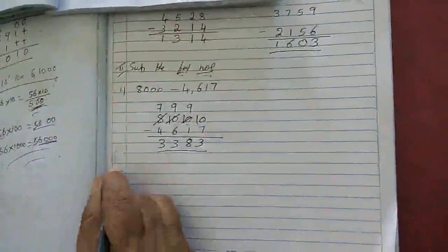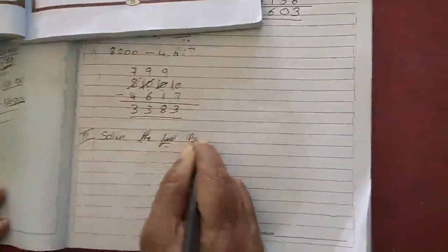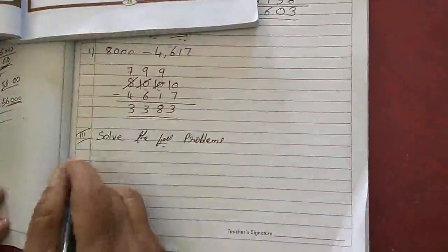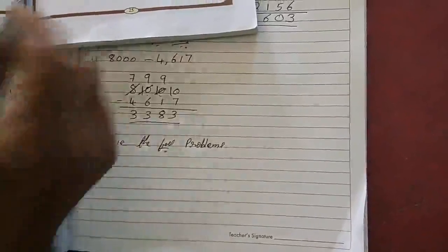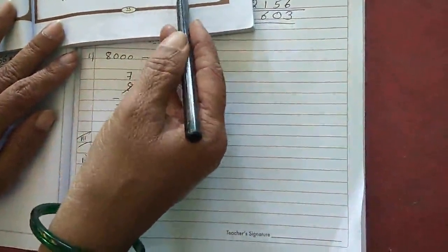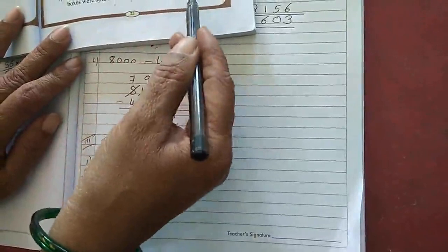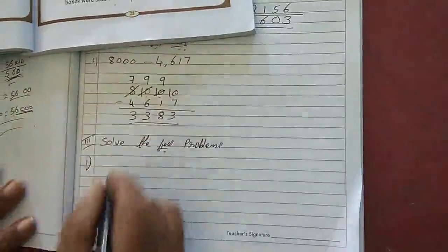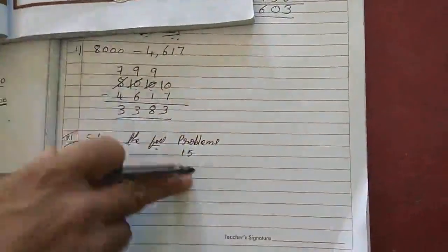Now the third section — solve the following. Third section: do the workout. See first sum. A factory manufactured 8,534 boxes. Out of them 5,421 boxes were sold. Find the remaining number of boxes. For example, your mummy gave 15 chocolates for you children.